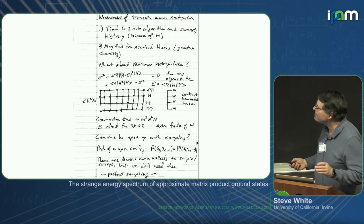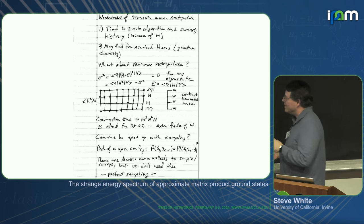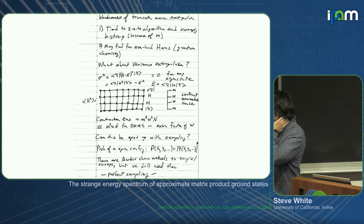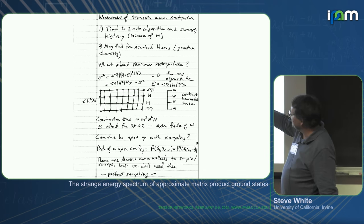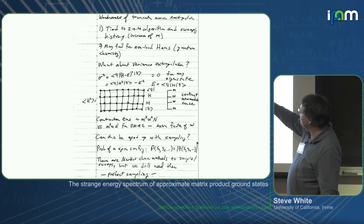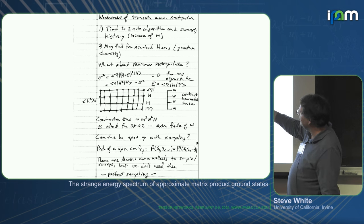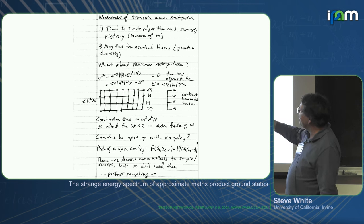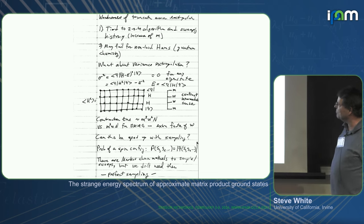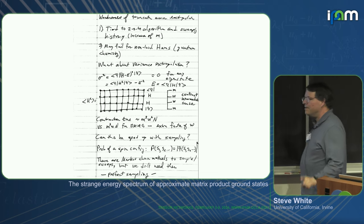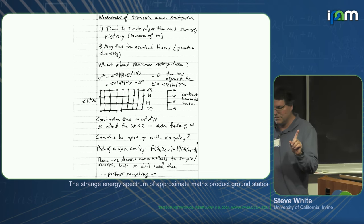The weaknesses of the truncation error extrapolation: it's tied to the two-site algorithm, you don't have it for the one-site, it's tied to the sweeping history, and it may fail for some non-local Hamiltonians.